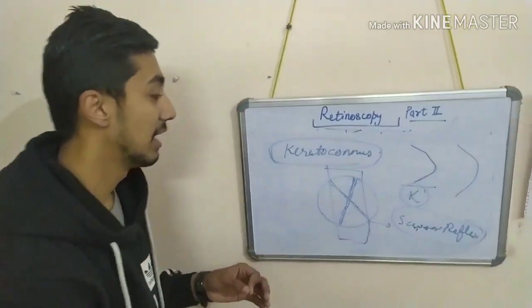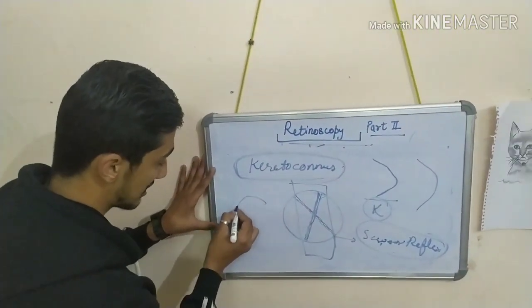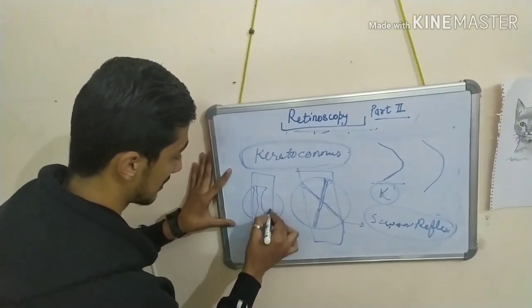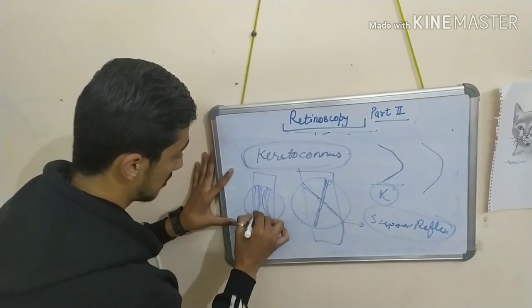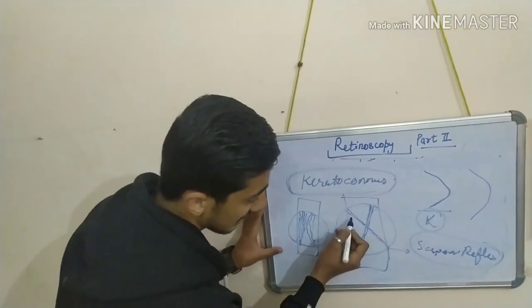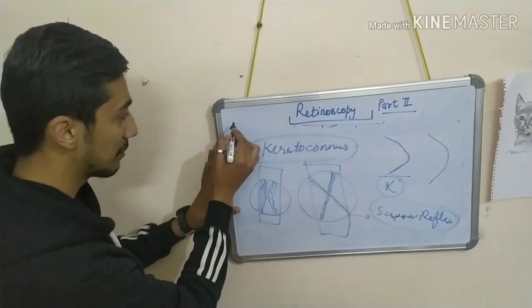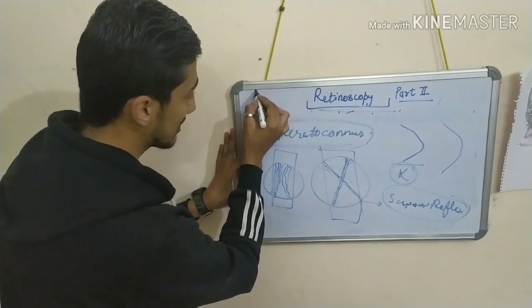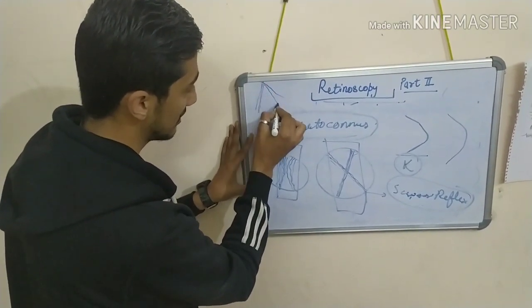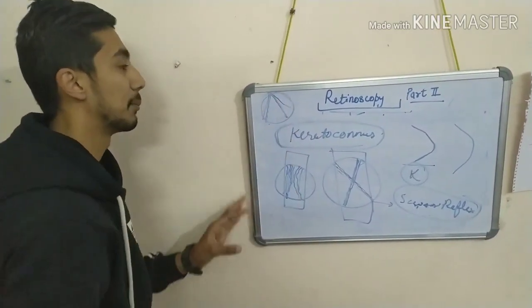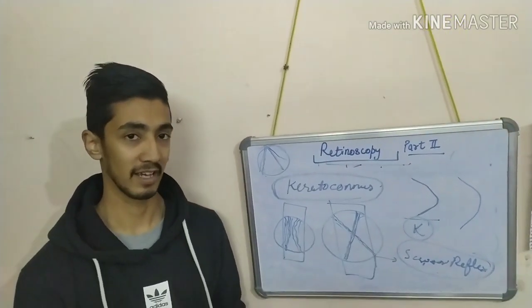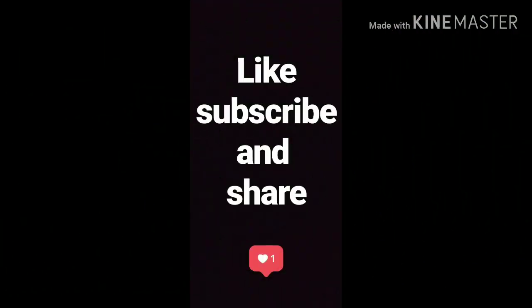This is known as the scissor reflex. One more thing: if you put the slit on the patient's eye and you see a break here — a break like this — this is also known as the neutral break, or neutral point, where the reflex is fixed on one side and breaks on the other side. This is all. Here we cover most of the retinoscopy. If you have any doubt, you can comment. Thank you.